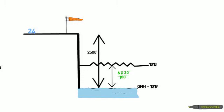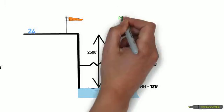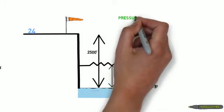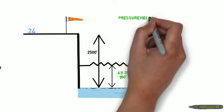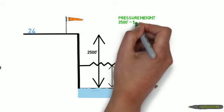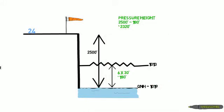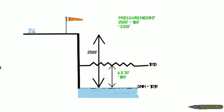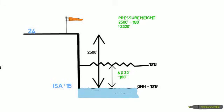The pressure height, by definition, is the height above or below the ISA 1013 datum. And the diagram helps us work this out as 2,500 minus 180, which is 2,320. That's pressure height.